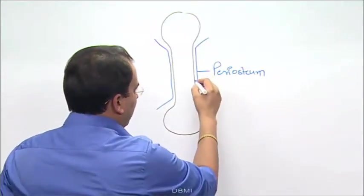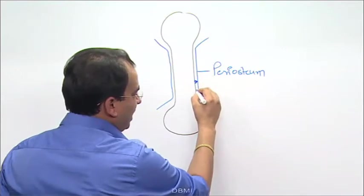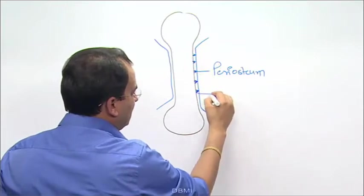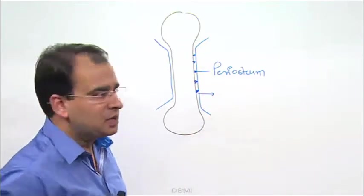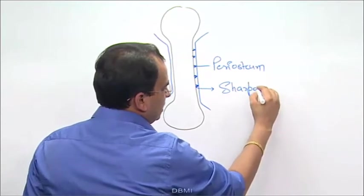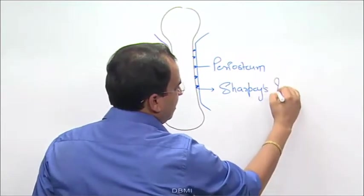What is periosteum? Periosteum is a fibrous layer which is adherent to the underlying bone by these collagen fibers which are called as Sharpey's fiber. These are called as Sharpey's fiber.